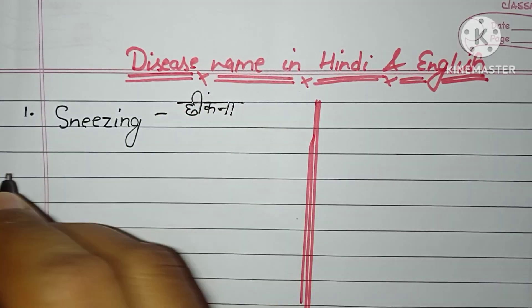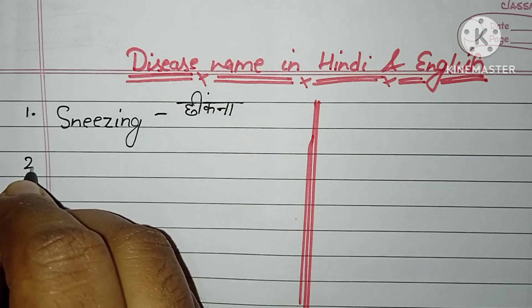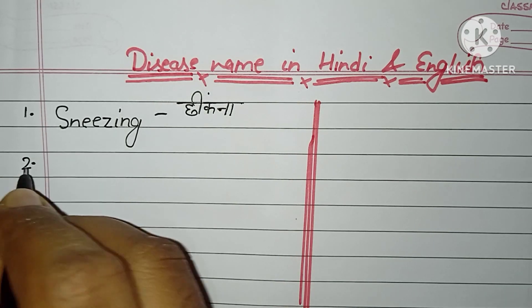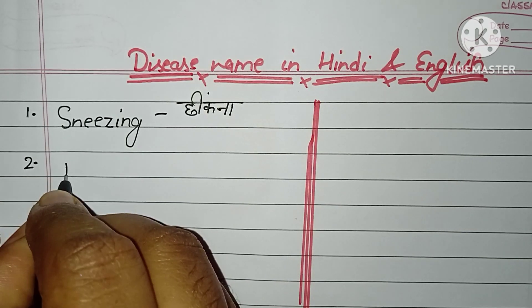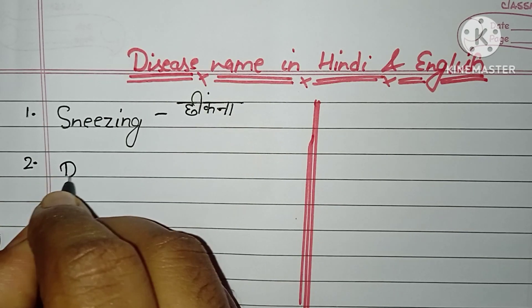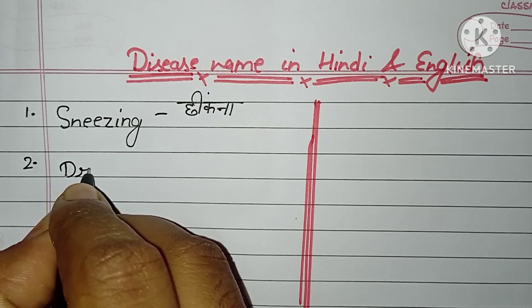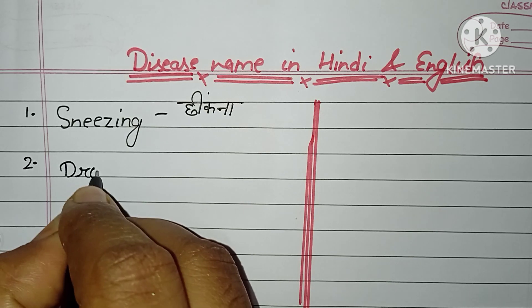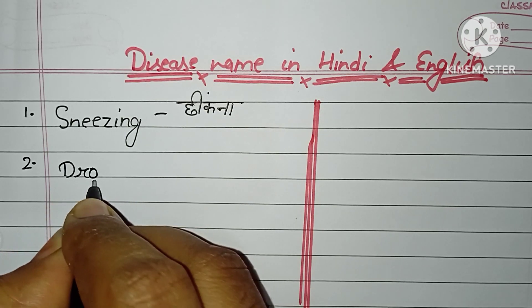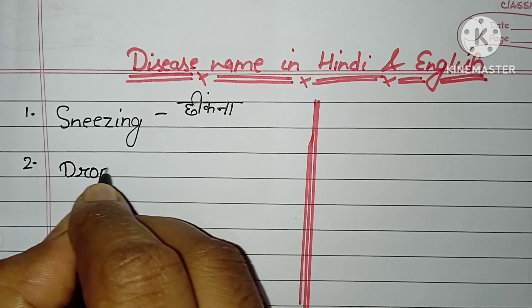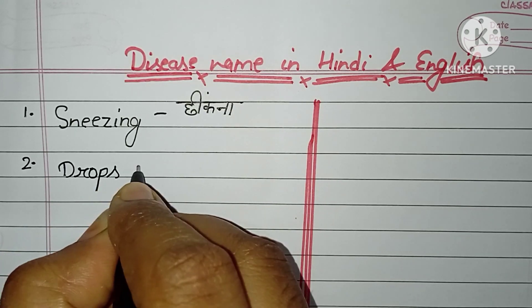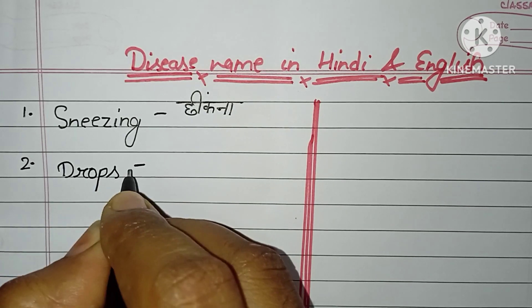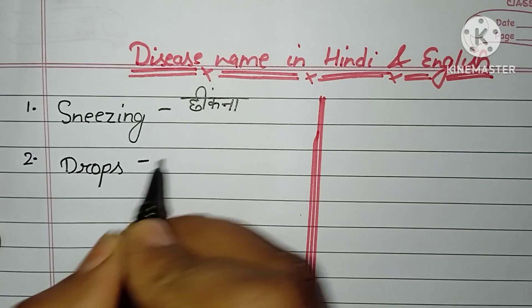Number two: drops. D-R-O-P-S. Drops. Jalodhan.